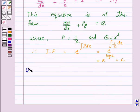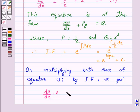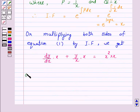Now, on multiplying both sides of equation 1 by the integrating factor, we get dy by dx into x plus y over x into x is equal to x squared into x, or dy by dx into x plus y is equal to x cubed.